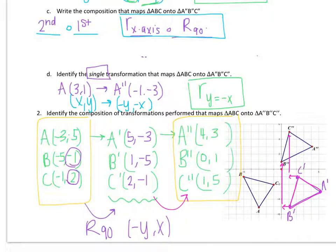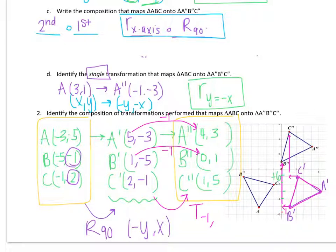I notice I'm moving left by 1, which is subtracting 1. So 5 minus 1 is 4, and 1 minus 1 is 0 — confirming we subtract 1 from the x values. Looking at the upward shift, it looks like I'm moving up 6, so plus 6. Testing: -5 plus 6 gives 1, and -3 plus 6 gives positive 3. So this transformation is a translation, a slide, by (-1, 6).